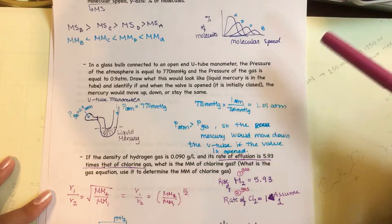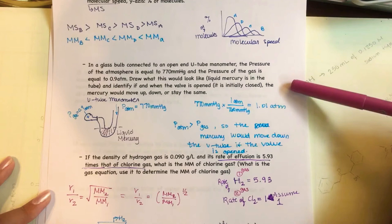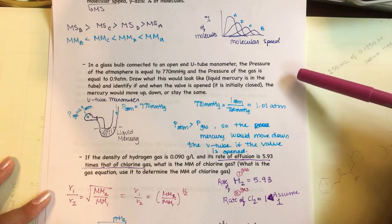Millimeters of mercury, ATM, torr, pounds per square inch. The ones you mainly want to know are torr, ATM, millimeters of mercury, millibars, pounds per square inch or PSI.